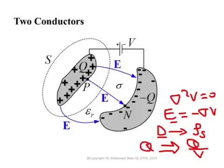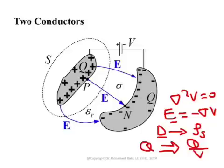The second approach is the Q method. It is a bit different and applies mainly to cases of high degrees of symmetry. You assume a certain charge Q, apply Gauss's law to get the displacement vector D, from D get E, then integrate E dot dl between the two electrodes to get the voltage difference. The ratio of charge to voltage difference gives the capacitance.